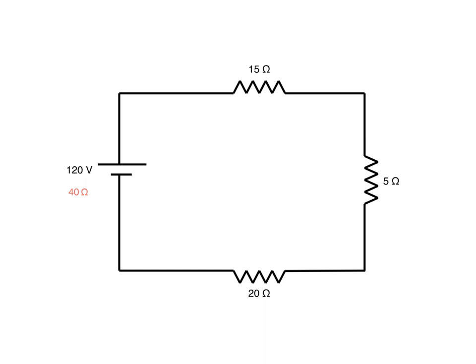That gives us 40 ohms of total circuit resistance: 20 plus 5 is 25, plus 15 equals 40. This entire circuit has a total resistance of 40 ohms. Now we can see that we have 120 volts and 40 ohms.